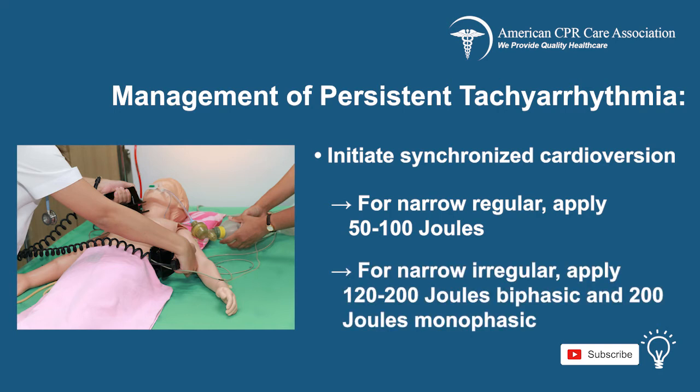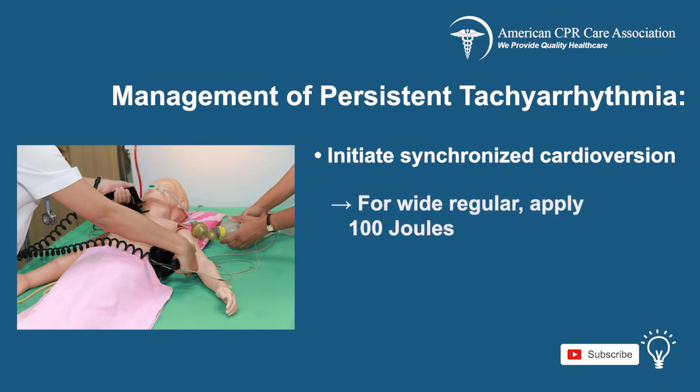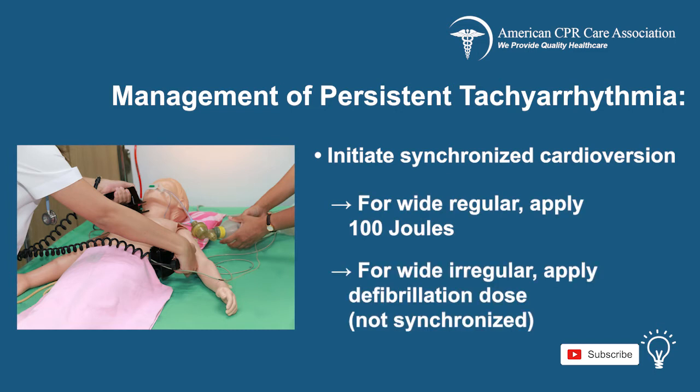For narrow irregular, apply 120 to 200 joules biphasic and 200 joules monophasic. For wide regular, apply 100 joules. And for wide irregular, apply the defibrillation dose.